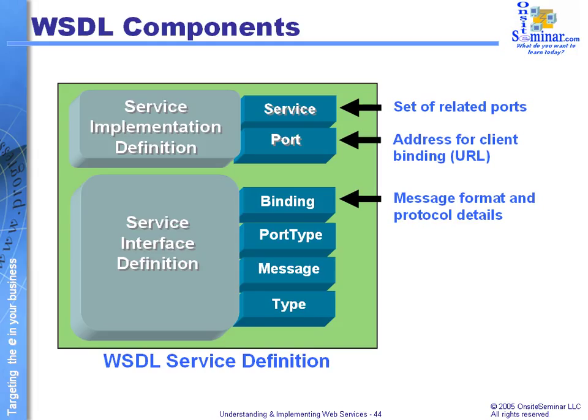The binding type covers message format and communication protocol aspects — specifically, the SOAP aspects of creating SOAP-type messages. On the abstract type side, we're talking about the different kinds of information and data that are going to be transmitted. So for every port address point, what kind of data are we going to be expecting to be transmitted through it?